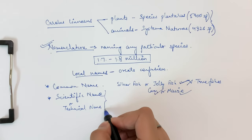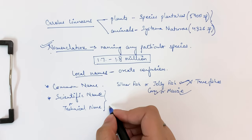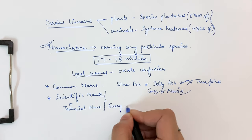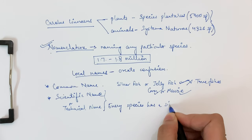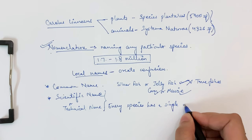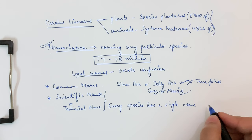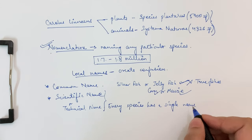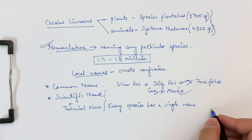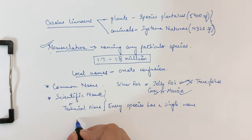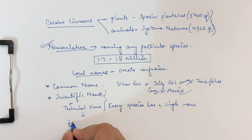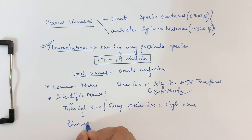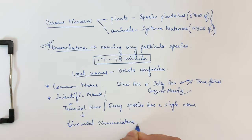The advantage of a scientific or technical name is that every species has a single name. Carolus Linnaeus gave us the system of nomenclature known as binomial nomenclature.